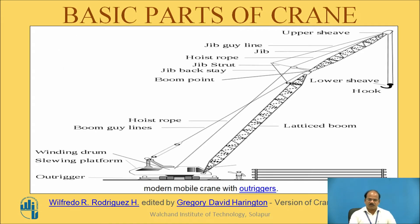To begin with, let us see the wonderful machine called a crane, which has got its name from a bird. You can see the long neck; there is a base at the bottom which is supported onto outriggers. Then there is a winding drum and a platform, then a latticed boom connecting to the jib at the top. The jib ultimately reaches the upper sheave, which carries a hook that gets attached to the supported load. You can see various parts of the hoist rope which connect to form the action of the crane.